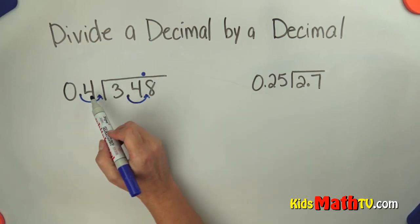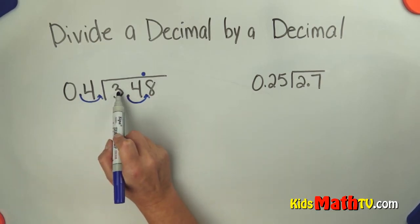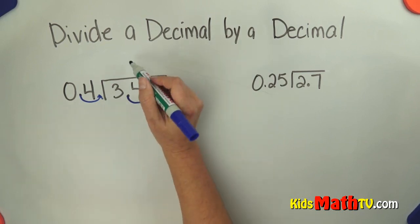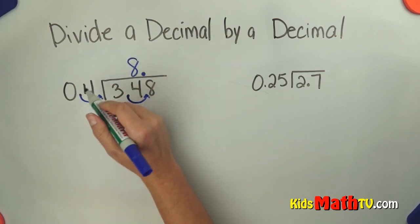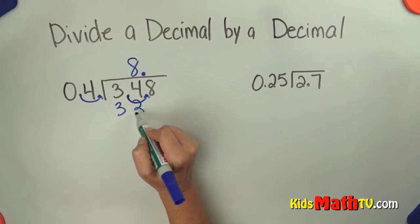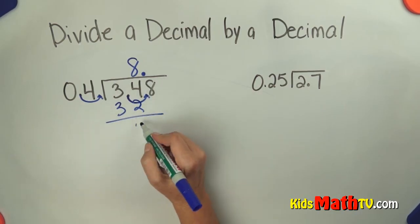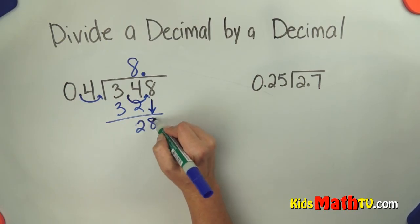So there are no 4's in 3 but there are 8 in 34. 8 times 4 is 32. Subtract, I get 2. Bring down the 8.